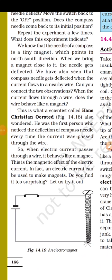So when electric current passes through a wire, it behaves like a magnet. This is magnetic effect of electric current. In fact, an electric current can be used to make magnets.